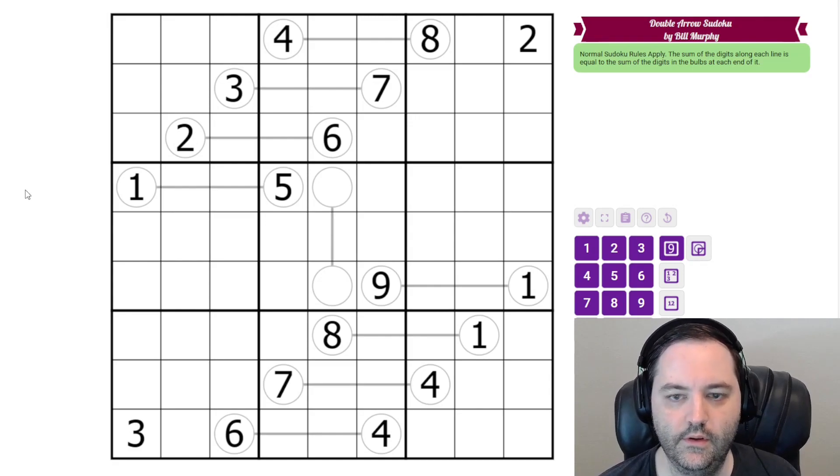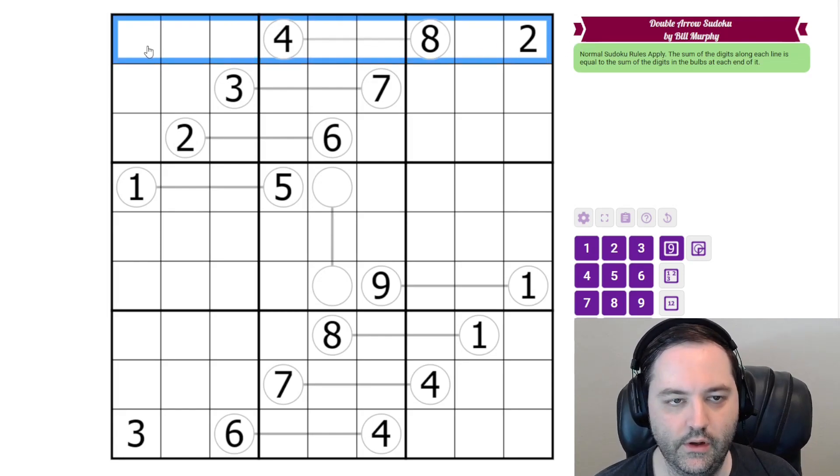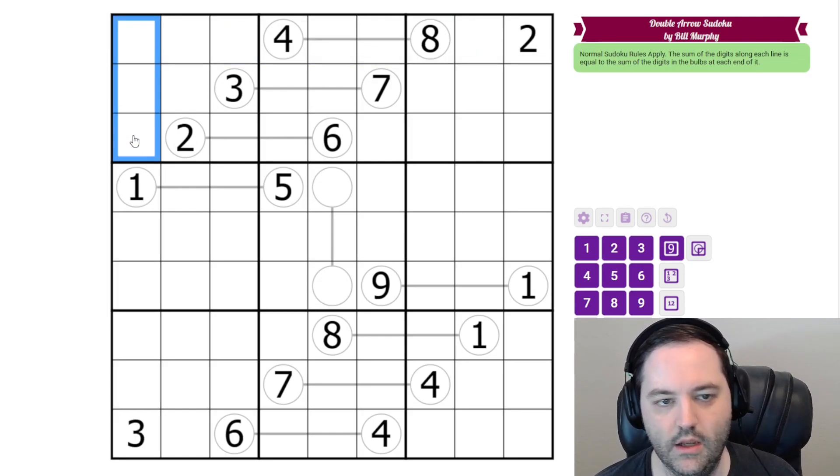Hi everyone, this is the solved video for the November 26th GAS Double Arrow Sudoku by Bill Murphy. Normal Sudoku rules apply, so we need the digits from 1 to 9 in each row, column, and 3x3 box.